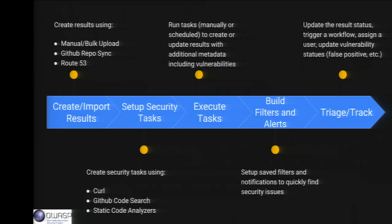You can get alerts when something changes — if a CSP policy suddenly changes, you can get an alert. The next step is building filters. We've spent about a year building all these different tasks, and once built, the next step is really digging into what you're interested in. Scumblr allows you to create very granular filters to drill down to the specific results and assets you're interested in, then share those with team members or send alerts. We also have a gem called Workflowable for triggering workflow, assigning things to users, updating vulnerability statuses, and tracking and triaging vulnerabilities and security issues.